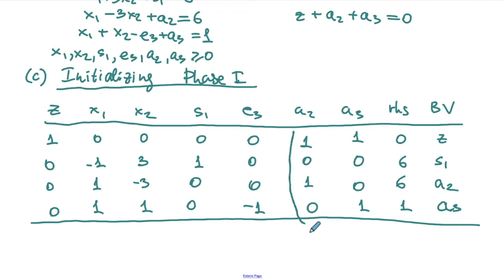This completes step 1. There is still a negative entry in row 0, so we proceed to step 2. e3 is the only candidate for the entering variable. For the ratio test, rows 1 and 3 have non-positive entries in the e3 column, so only row 2 restricts the move. The ratio is 5/1 = 5, making row 2 the ratio test winner and a2 the leaving variable.